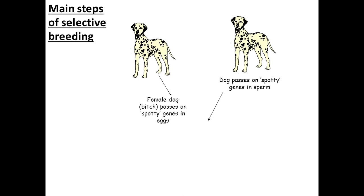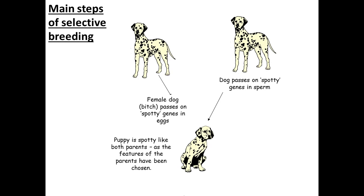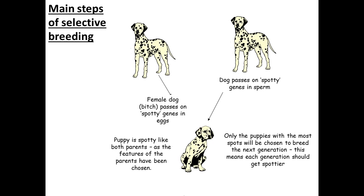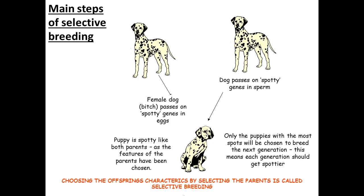The main steps during selective breeding — let's look at a selective breeding example with dogs. Step one: a female dog with spots is selected, as spots are the characteristic we want to pass on. Then a male dog also with spots is selected. These two dogs will breed and the offspring will have spots too. Only the offspring with the most spots will be selected to breed again. This means each generation should get spottier — with more and more spots.